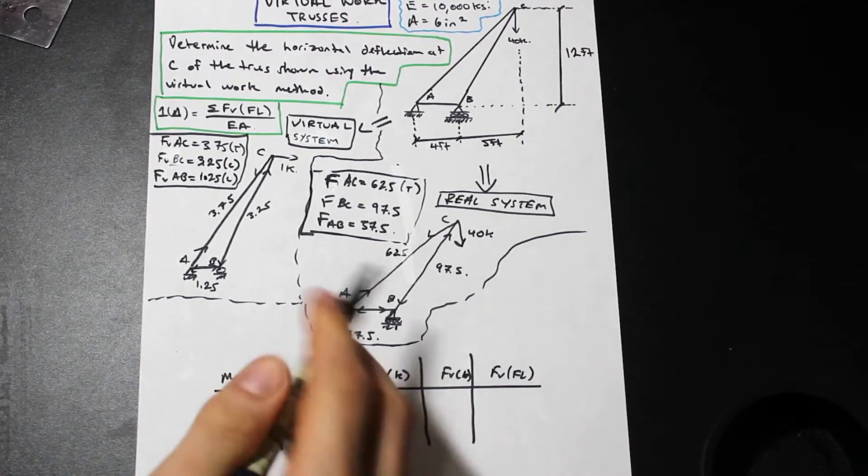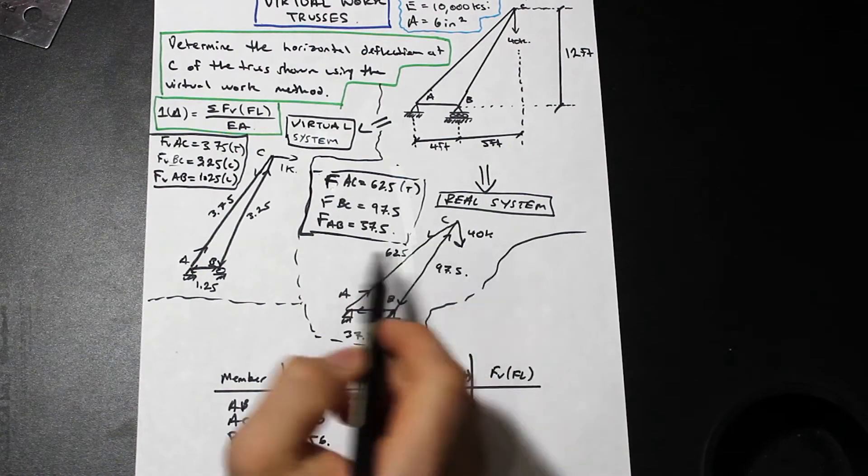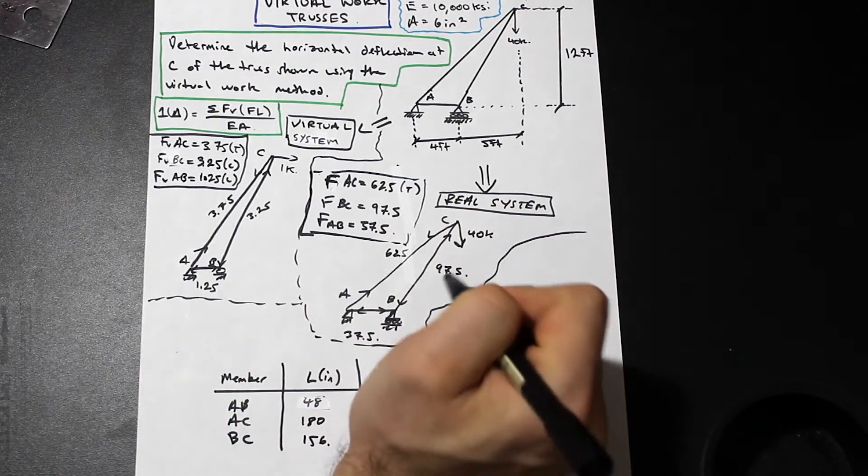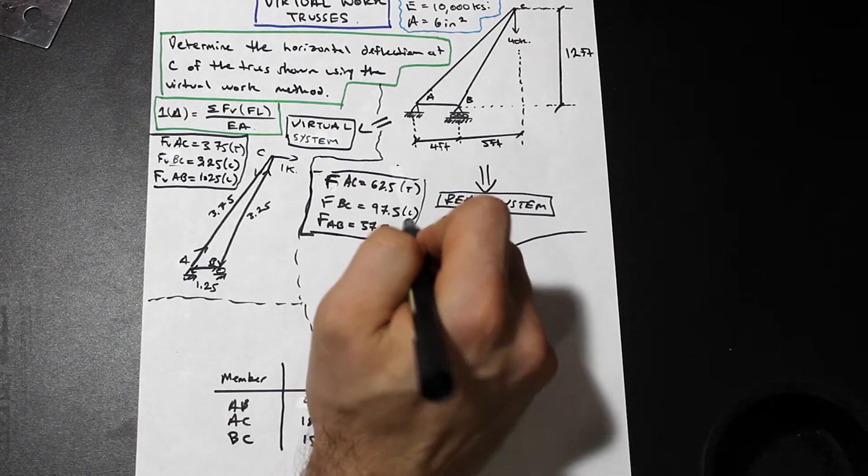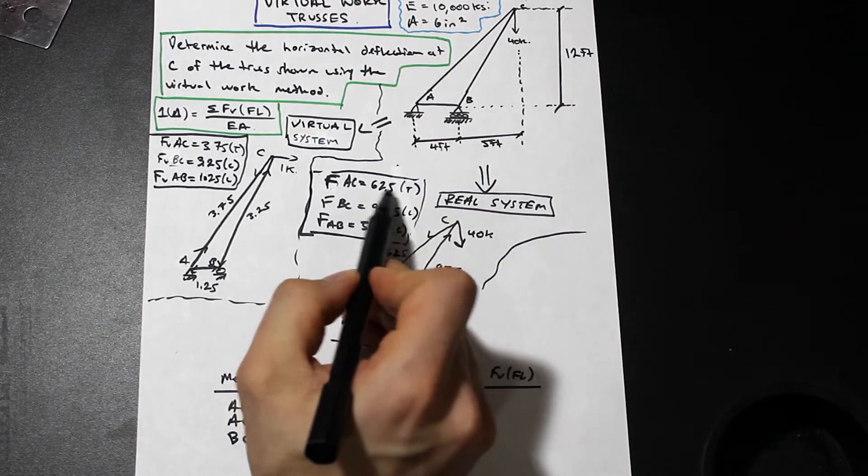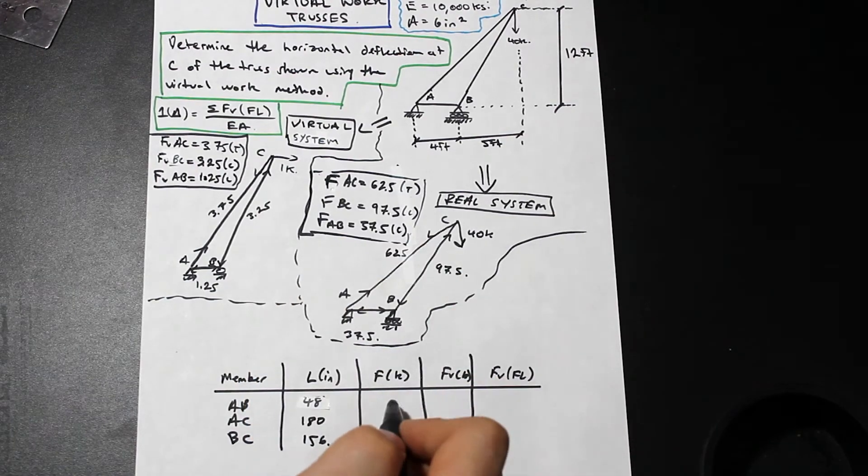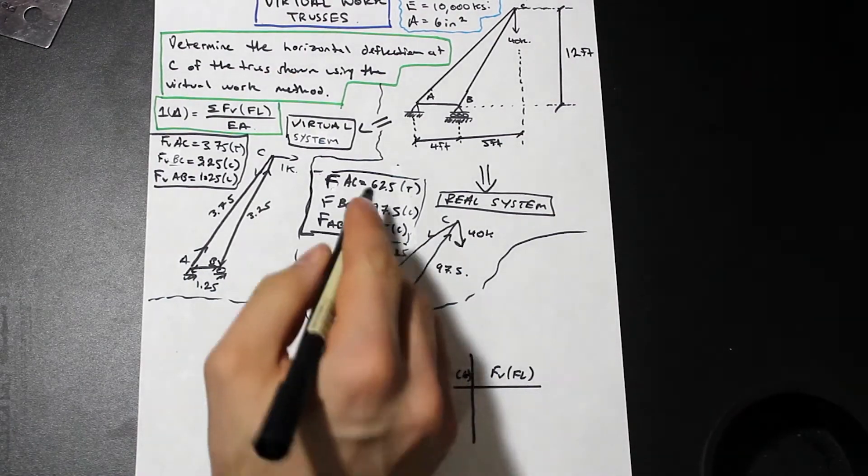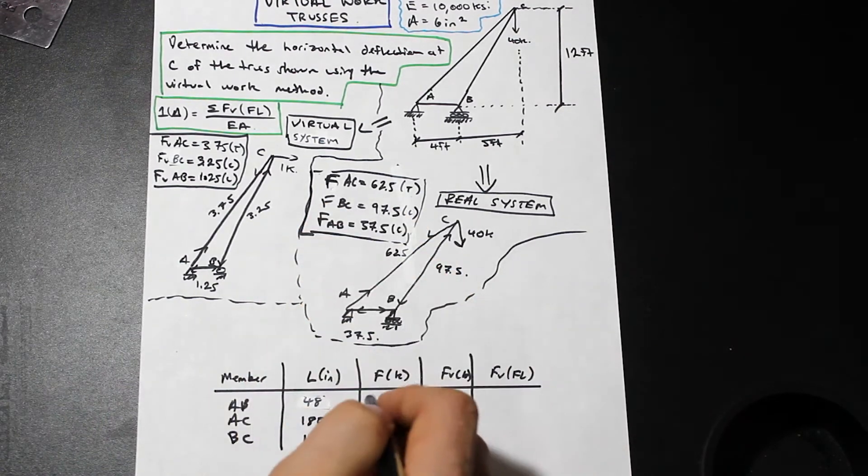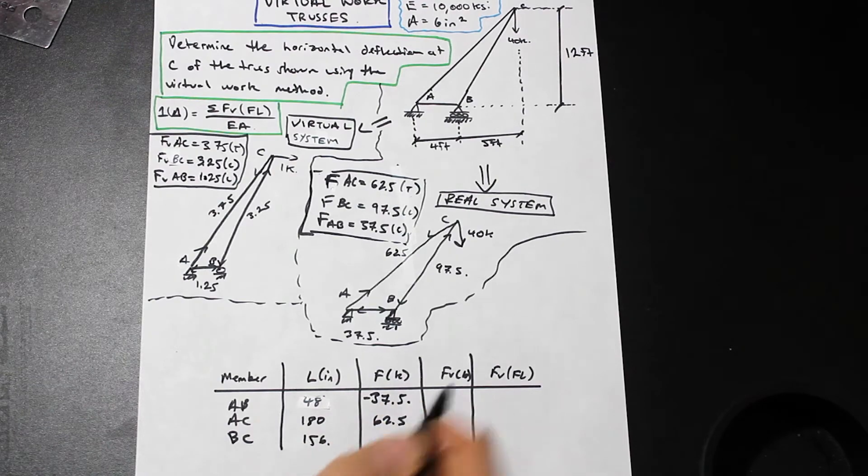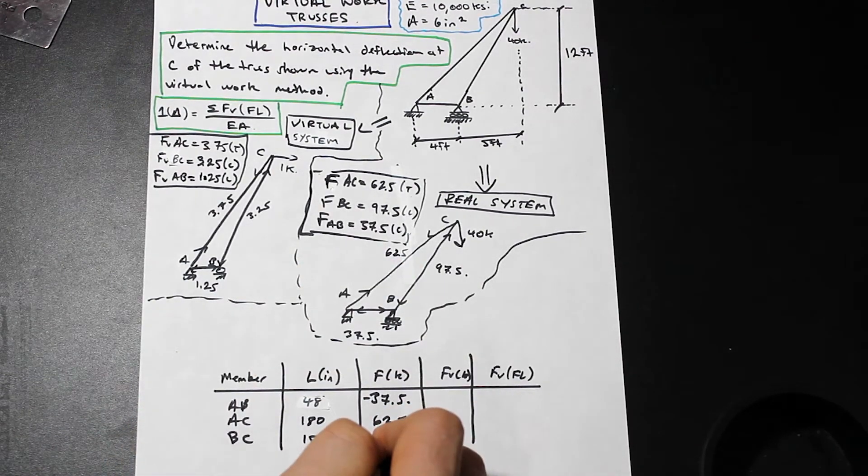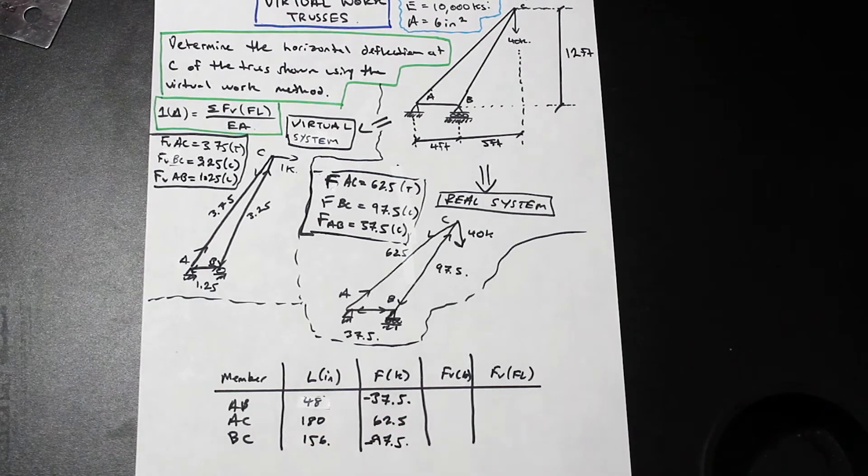For F, F was the axial forces that we found in the real system. We're going to put those in first and we're going to consider BC here. We found this to be compression and compression. For AC, 62.5 tension, we're going to take tension as positive. So AC was 62.5. AB was simply 37.5 and that's negative because it was compression. And for BC we got 97.5 and that's negative because it's compression.